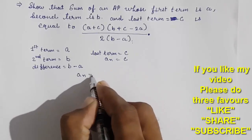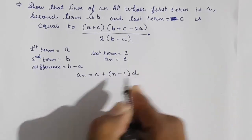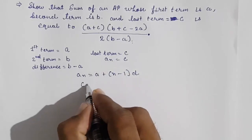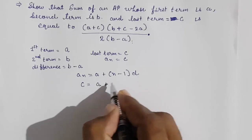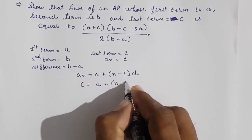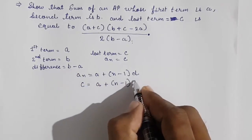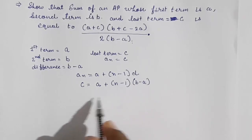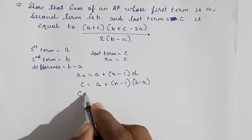Now we are going to put everything in our formula. The formula for the nth term is: aₙ = a + (n - 1) × d. This is the main formula for the nth term. We have c equals the first term a, plus (n - 1), and the common difference is (b - a), so let me write down b minus a.